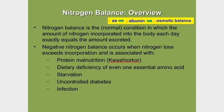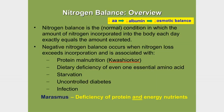Marasmus is a related condition involving deficiency of both protein and energy nutrients such as carbohydrates and fats. It is usually seen in children less than one year of age. The major difference between marasmus and kwashiorkor is that there is no edema in marasmus.